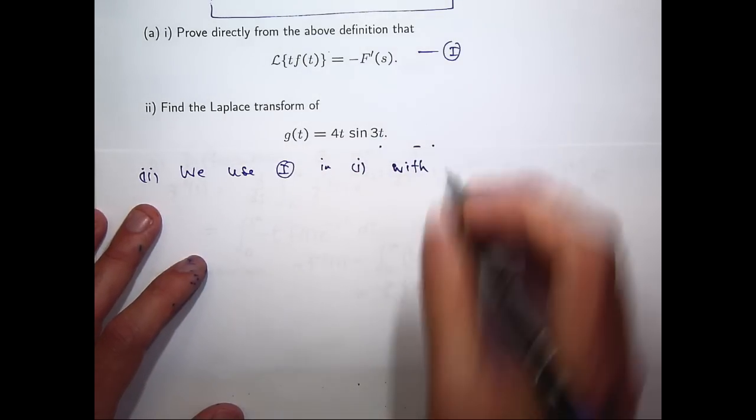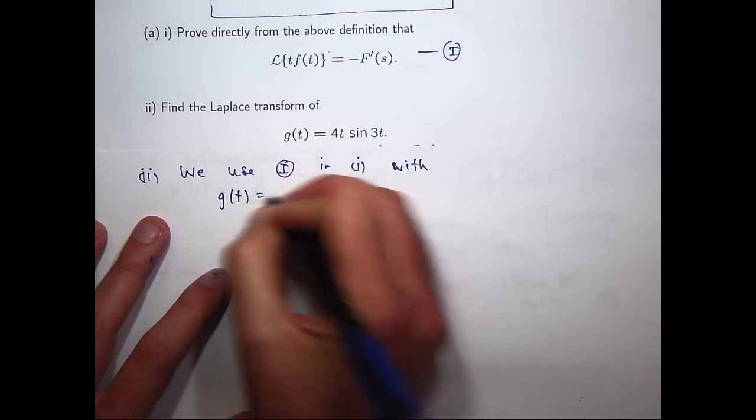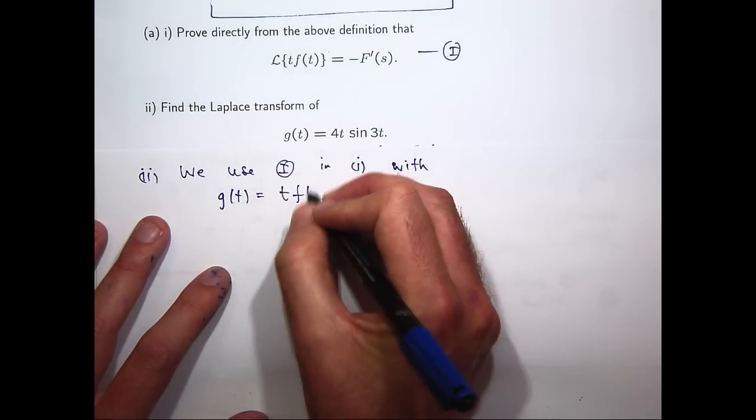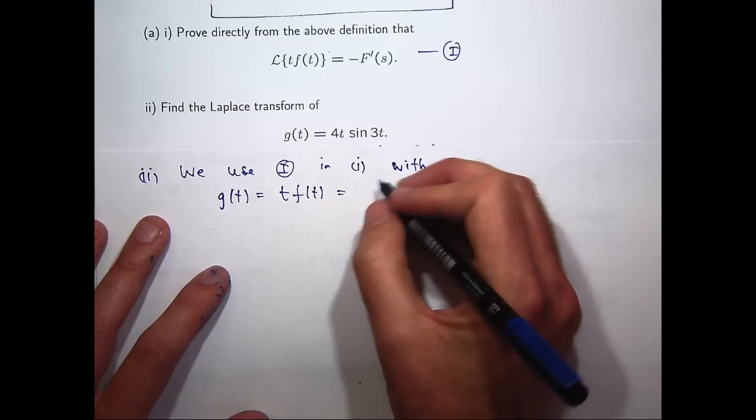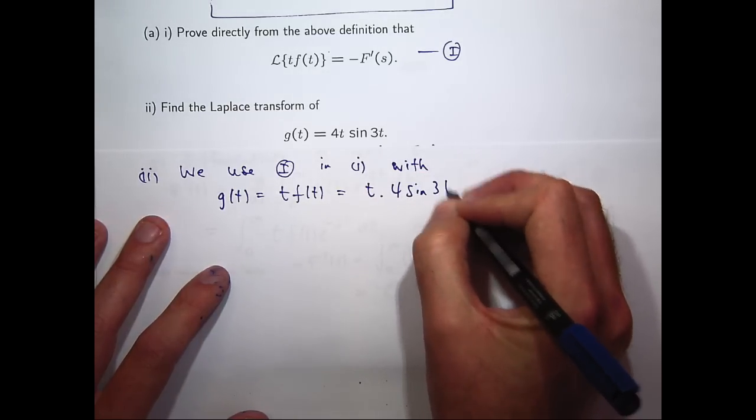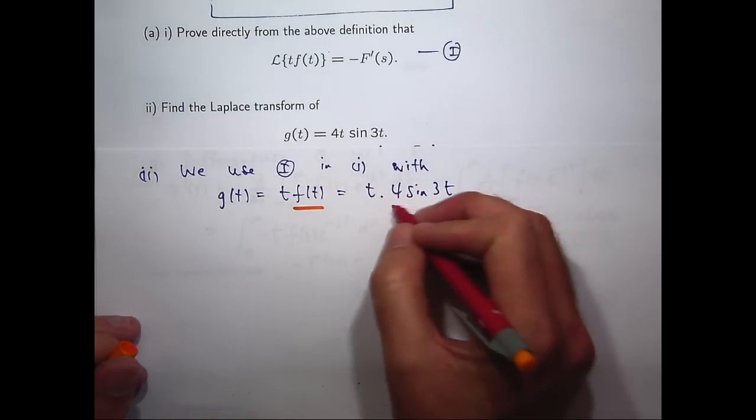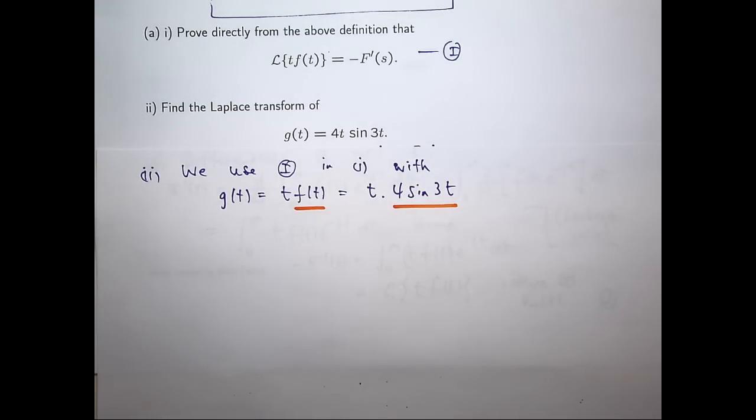So, think of little f of t in this context to be 4 times sine 3t. You could do the calculations just using sine 3t and then multiply everything by 4, but I'm not going to do it that way.